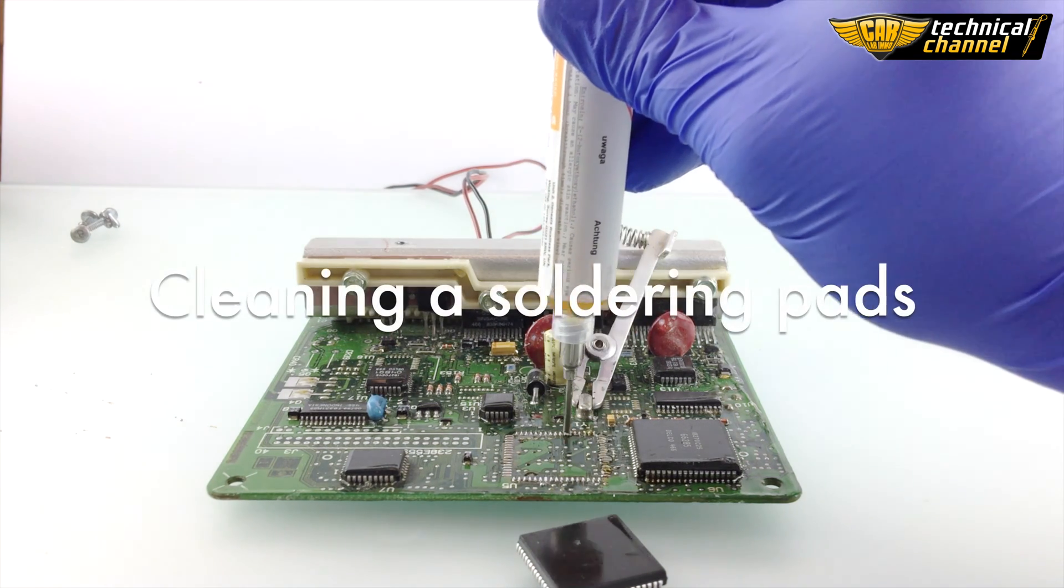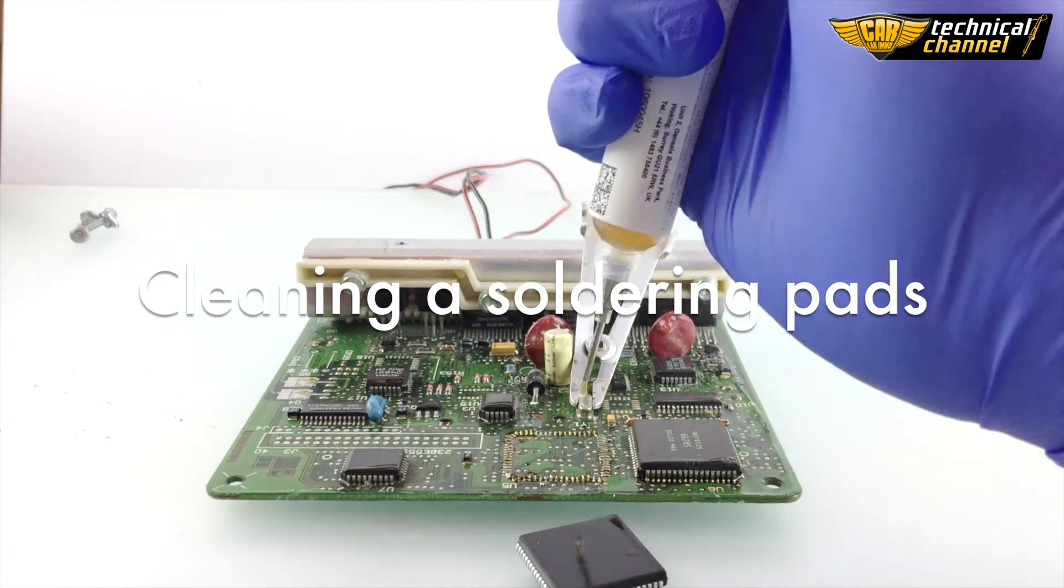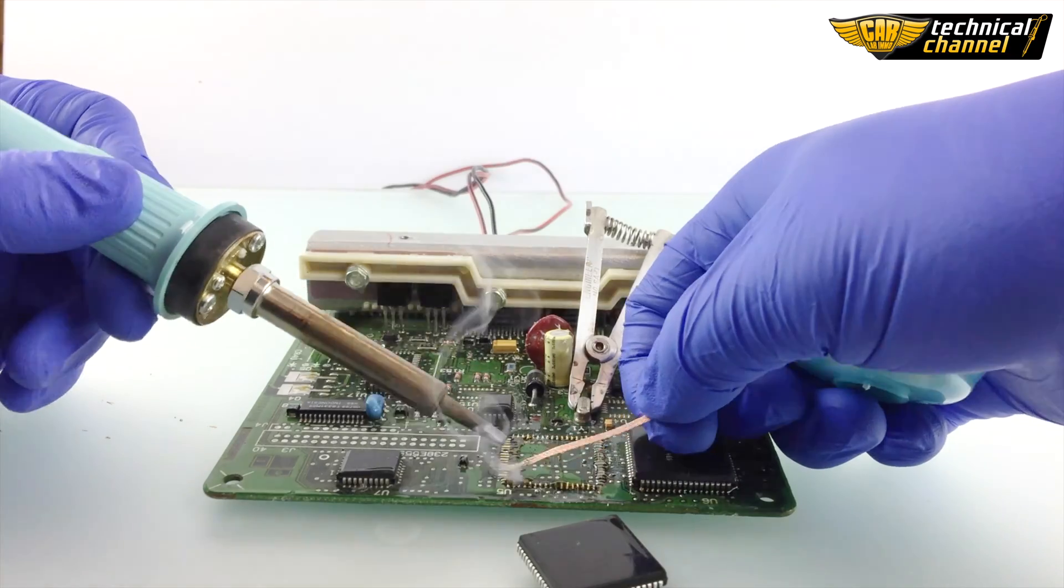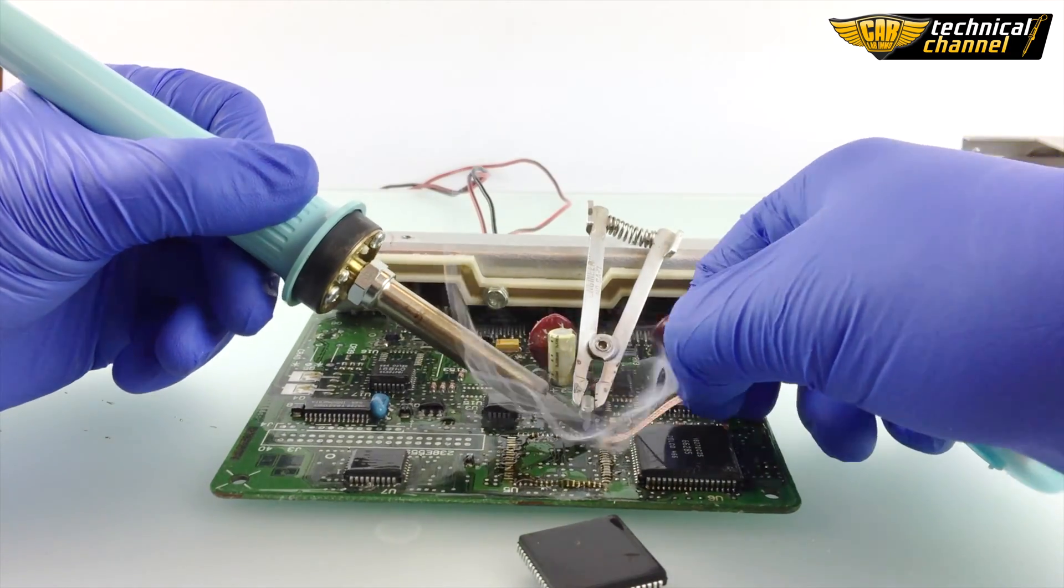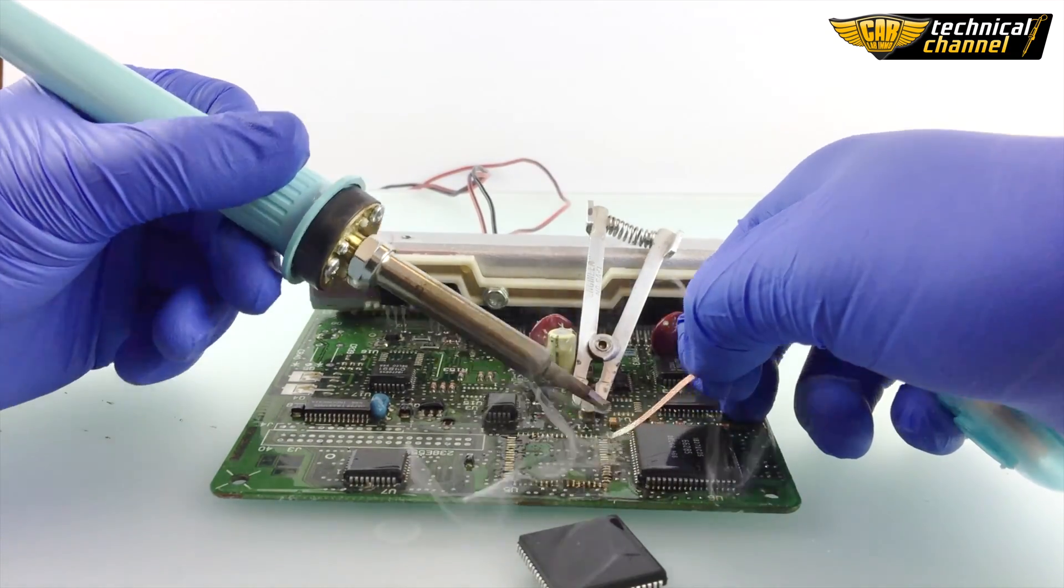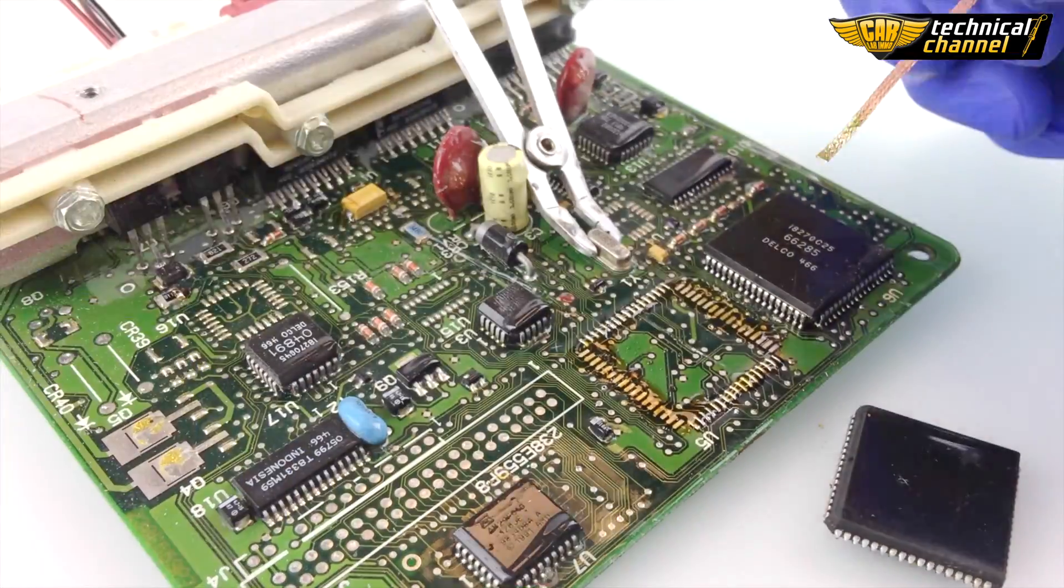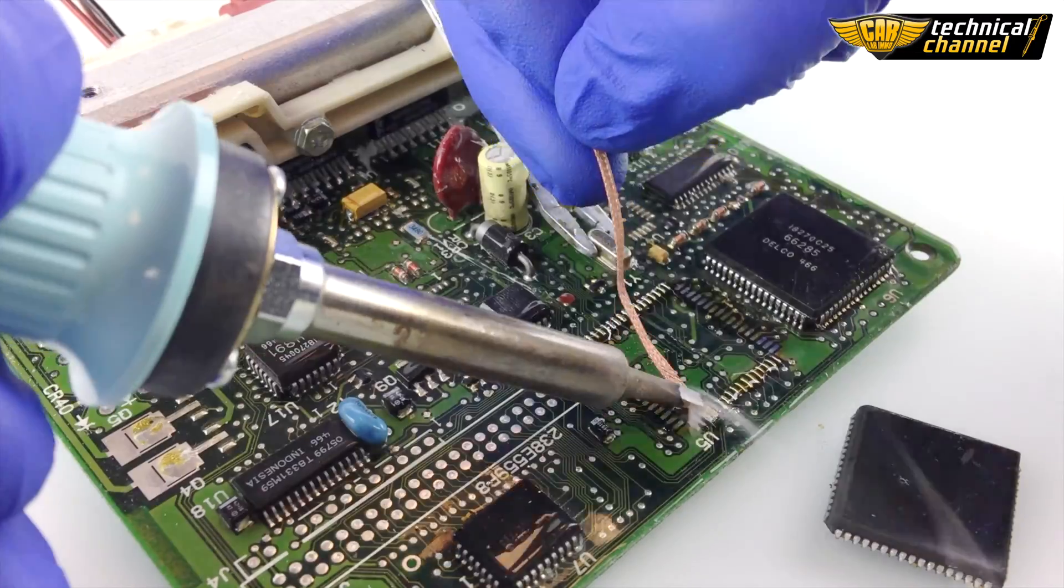Now we have to clean our solder pads from the tin. We'll need an iron gun, solder wick, and flux gel. Very important is to take the tin only along the solder pads.